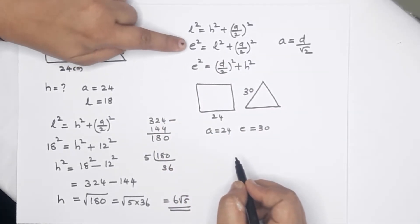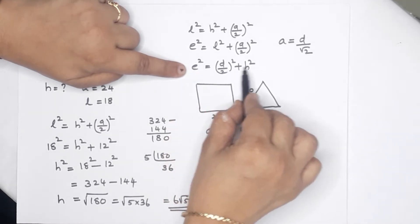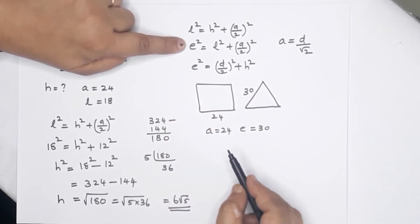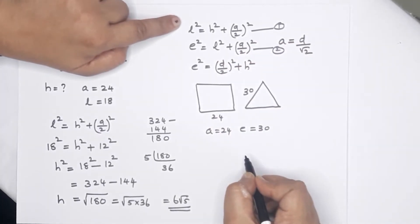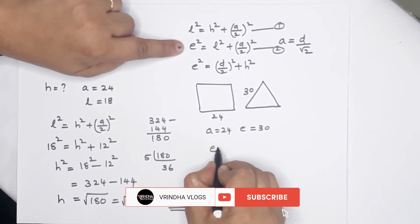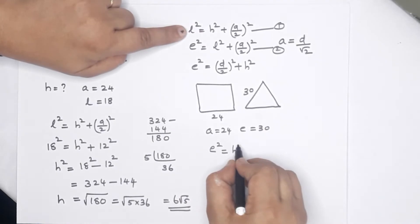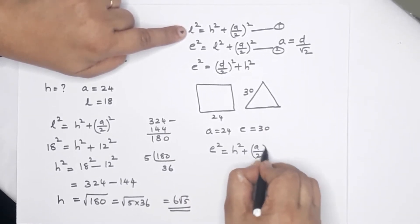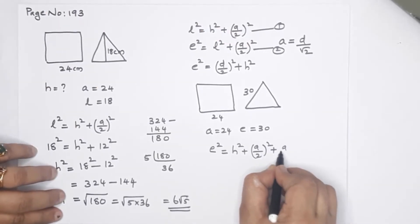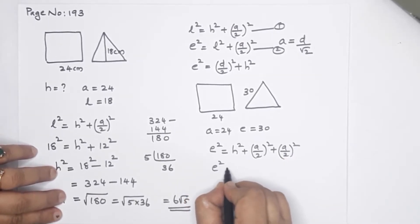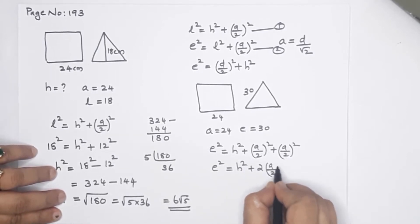We need to apply two relations: equation 1 is L² = H² + (A/2)², and equation 2 connects E. The formula is E² = H² + 2 × (A/2)². We can derive the relationship between E, A, and H using these two equations.